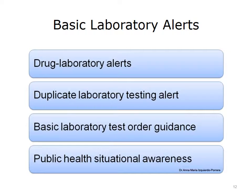Basic laboratory alerts include drug lab alerts, which are generated when drug administration requires close monitoring of laboratory results before and/or after administration. Duplicate laboratory testing alerts are generated when the patient has already had the lab test ordered. Basic laboratory test order guidance is an alert that provides ordering information with respect to the particular lab test being ordered. Finally, alerts can be generated to notify clinicians of public health alerts so that they can initiate appropriate laboratory testing during local disease outbreaks.